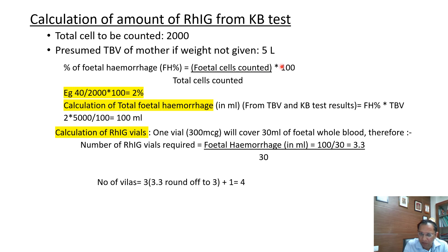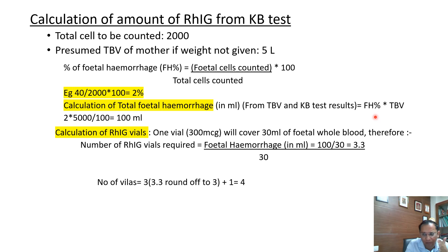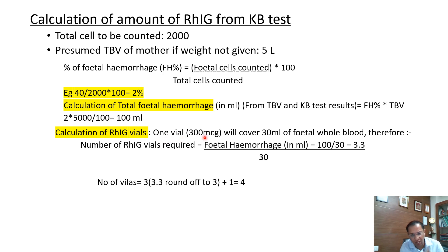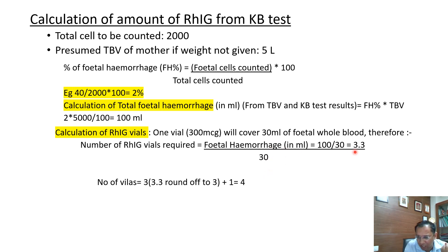For example, if 40 fetal cells are found out of 2000 counted, the percentage is 2%. Once you have the percentage, calculate the actual volume of fetomaternal haemorrhage in mL: multiply the percentage by total maternal blood volume (5000 mL) divided by 100, giving 100 mL. Now to calculate RhIg vials: one vial of 300 micrograms covers 30 mL of fetal whole blood, so divide the haemorrhage volume by 30 — here 100 ÷ 30 = 3.3.